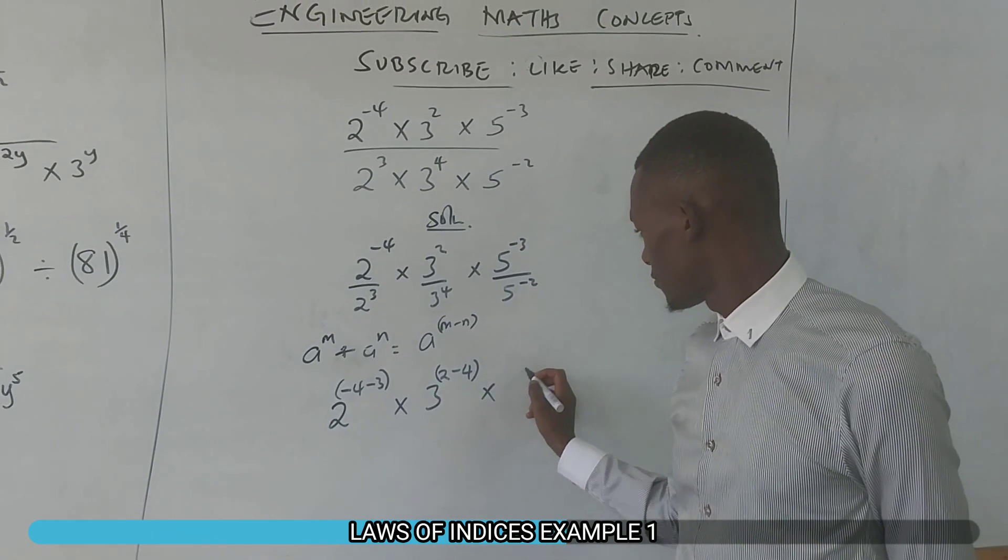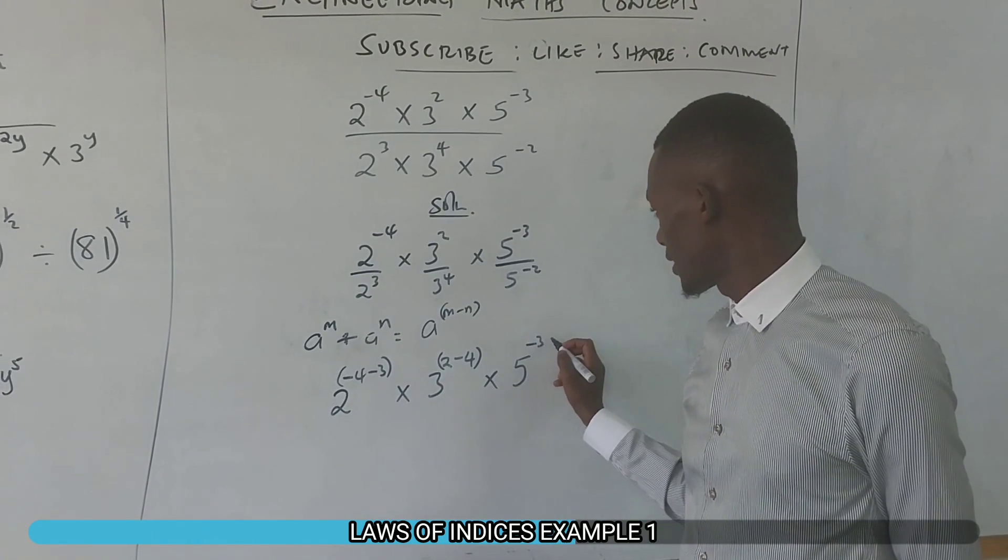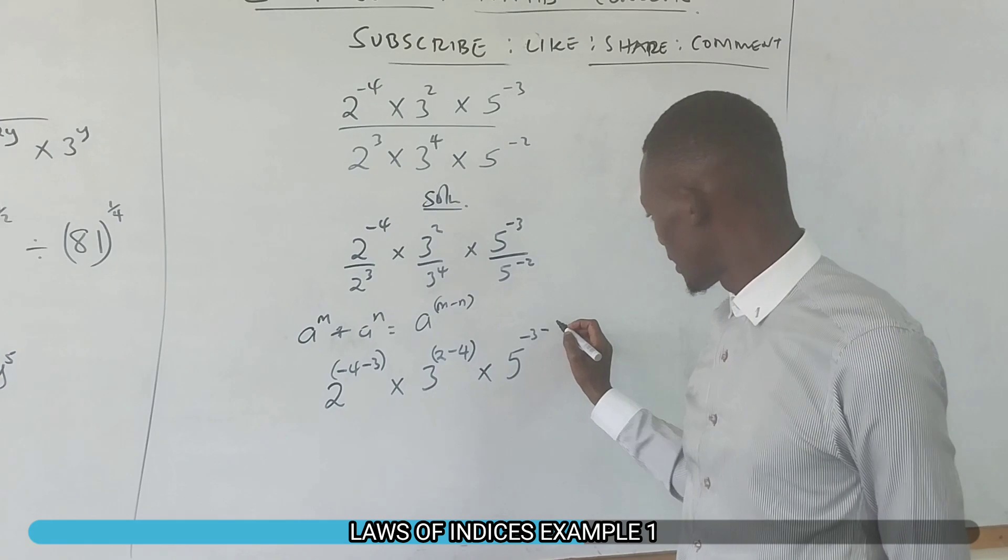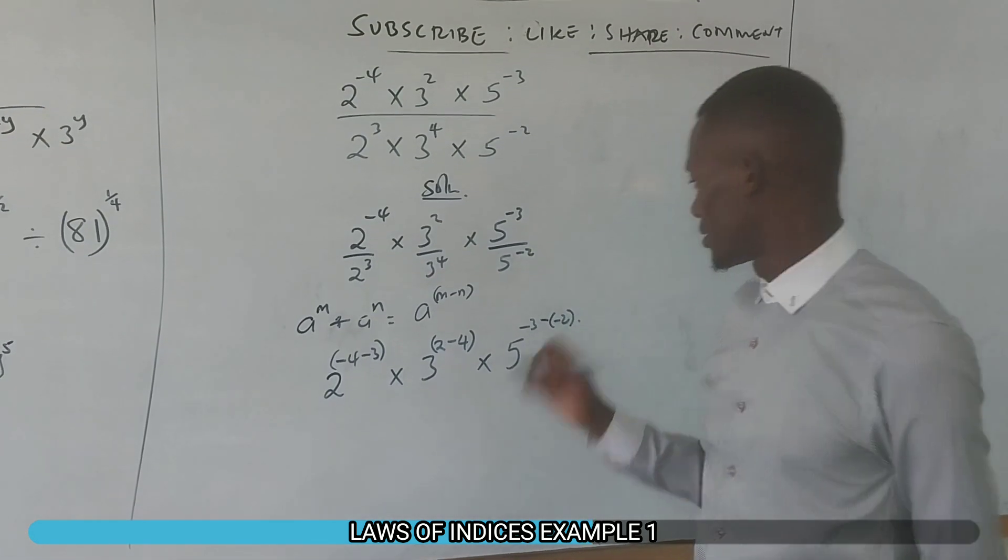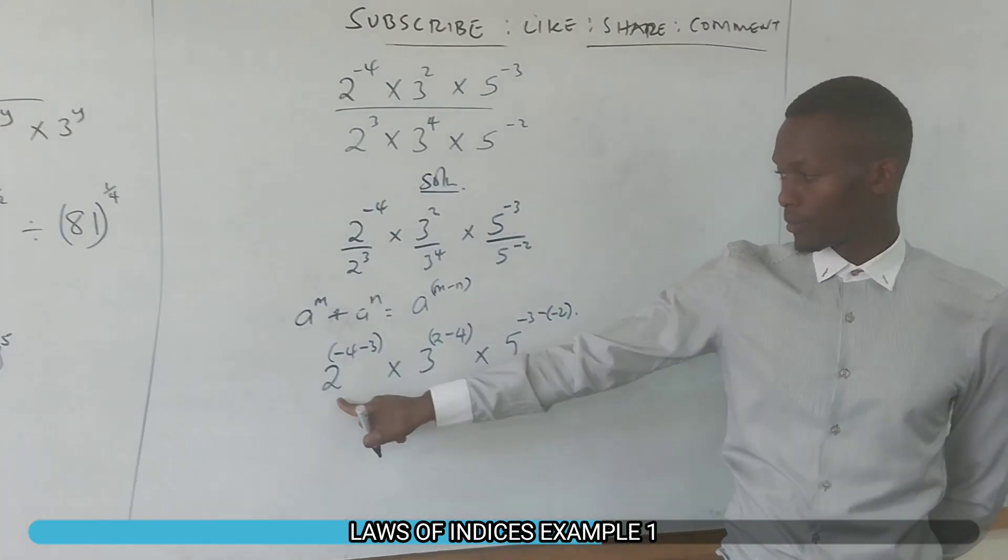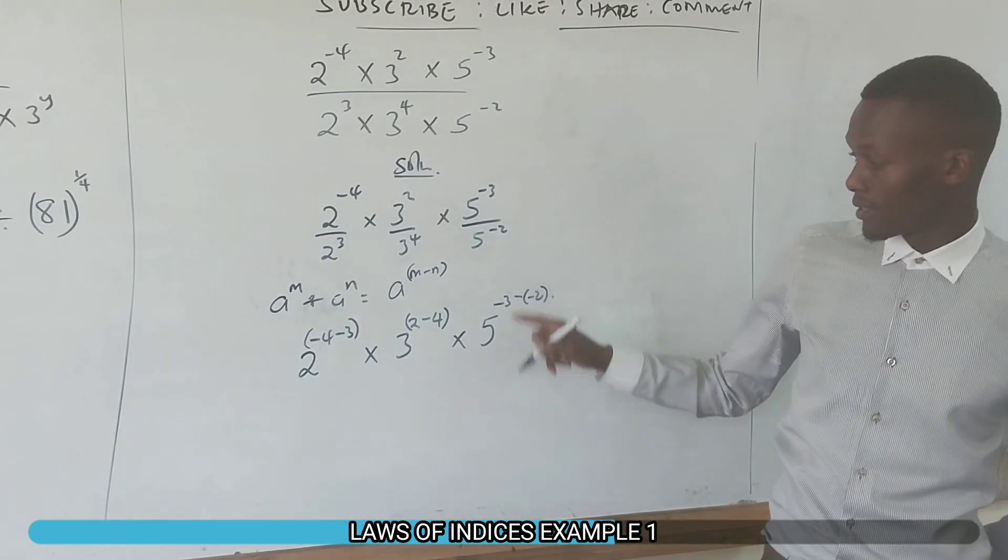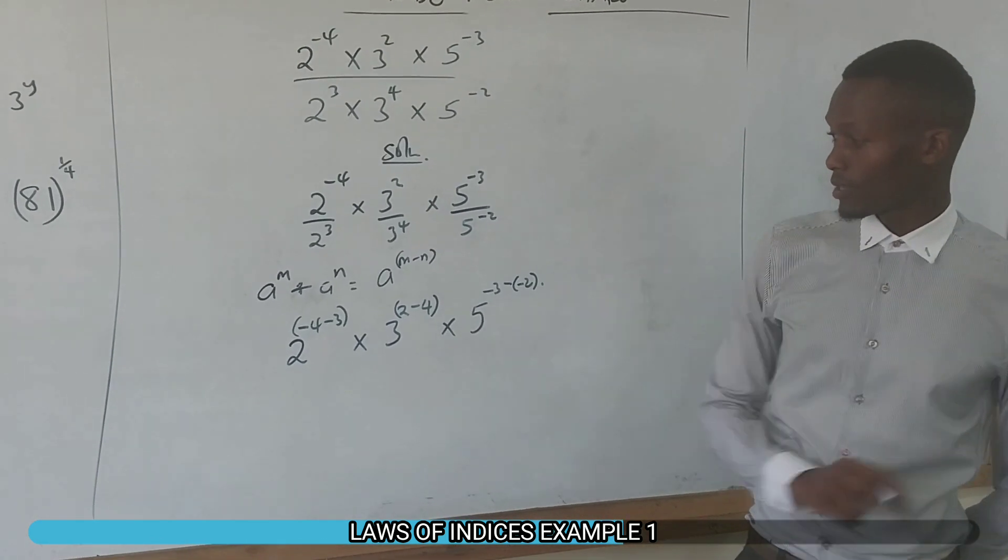Then times 5^(-3 minus -2). So each fraction simplifies using the quotient rule.